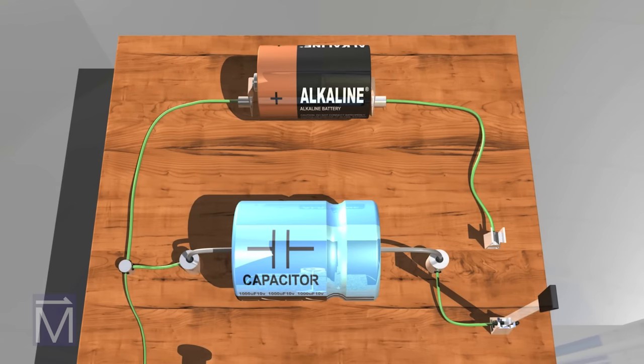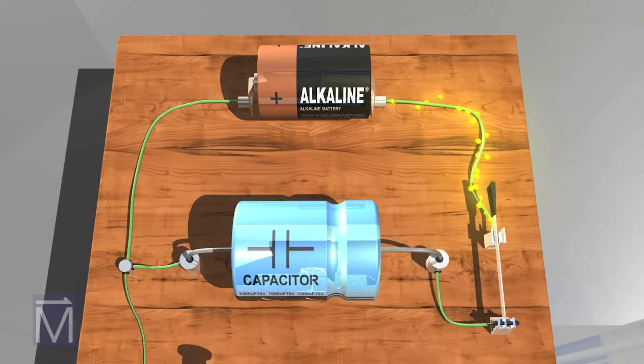First, we need to charge a capacitor. By closing the switch, we create a circuit that includes both the capacitor and the battery. Electrons flow from the battery to the capacitor where they are stored.